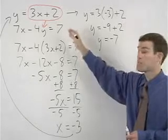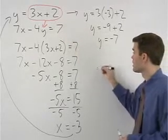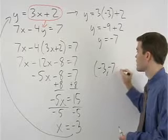So the solution to this system of equations is negative 3, negative 7.